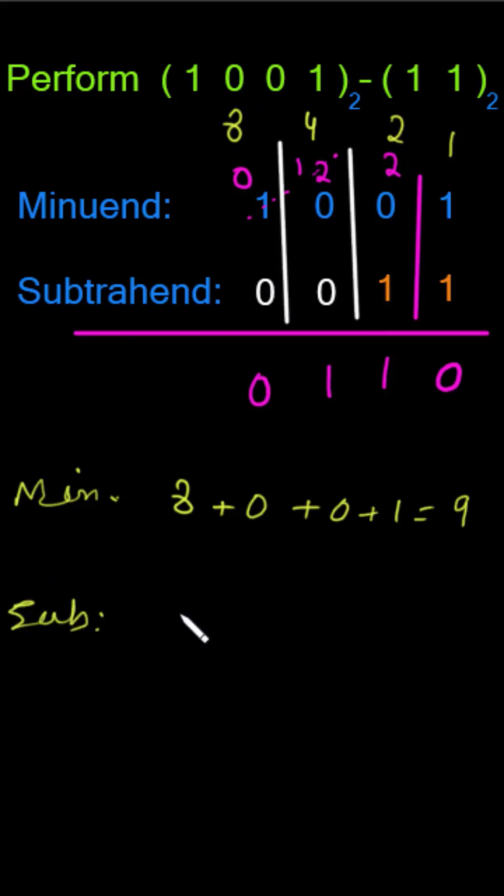Now this subtrahend: 0 times 8 equals 0, 0 times 4 equals 0, 1 times 2 equals 2, plus 1 times 1 equals 1. That's equal to 3. So the difference between 9 and subtracting 3 from 9 will give us 6.